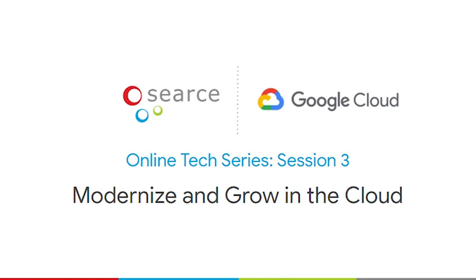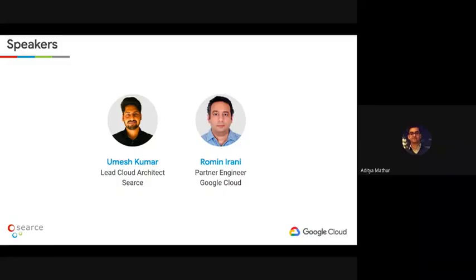Google having open-sourced Kubernetes several years back has got quite a bit of strength and expertise there. Specifically, we'll be talking about Anthos, which is the next big thing that Google Cloud has come up with on the Kubernetes front. It should be really interesting. I'd like to introduce my speakers — Mr. Roman Rani, who is a partner engineer with Google Cloud. He's dealt with a whole range of customers and has significant experience working closely with them, sharing his insights around Anthos.